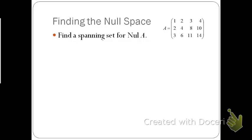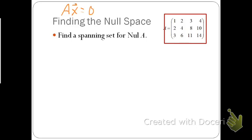Given a matrix A, we want to find a spanning set for the null of A. We want to know the set of all solutions to this system, Ax equals the zero vector — this homogeneous linear system.